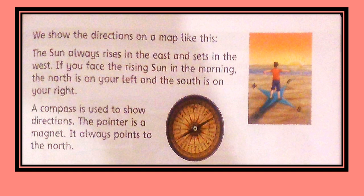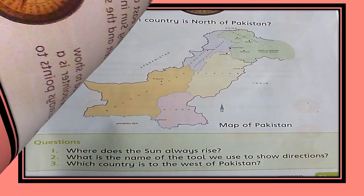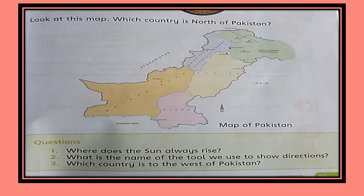A compass is used to show directions — the pointer is a magnet and it always points to the North. Now look at this map: which country is to the North of Pakistan? Do you remember the chant? North is up, South is down, East is to my right side, and West is to my left side. So have a look at what is on the top of the map. That is China.